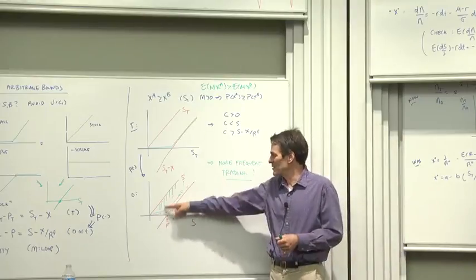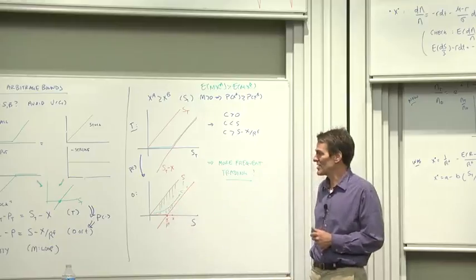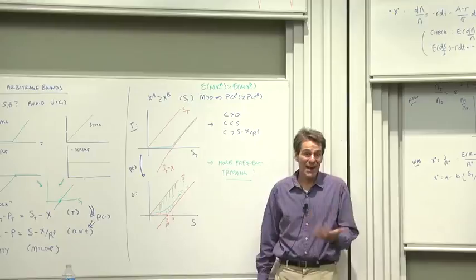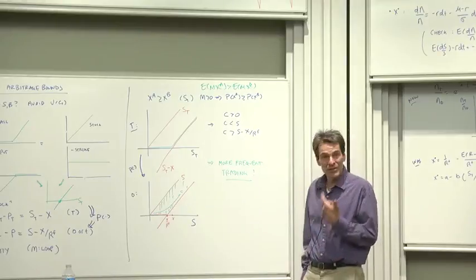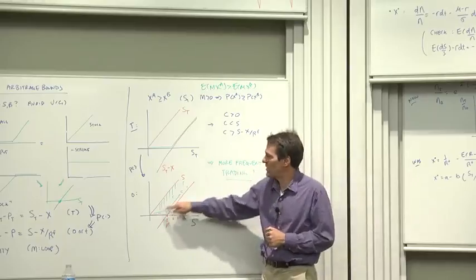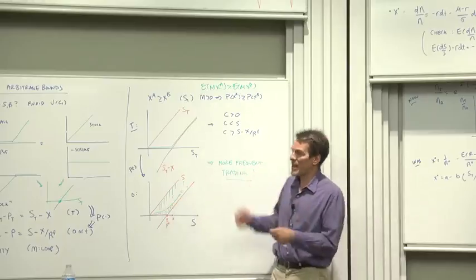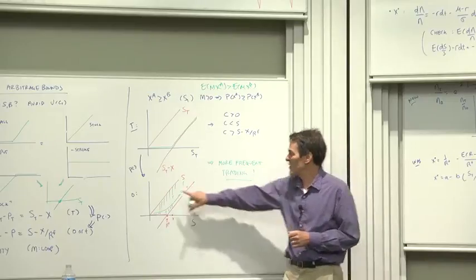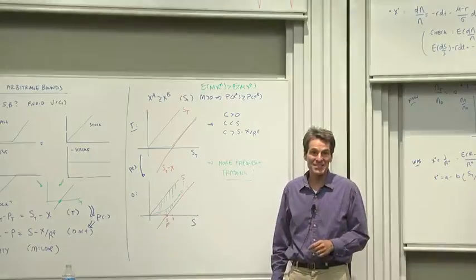Unfortunately, this isn't very useful — that's a very wide area that pure arbitrage gets us. How could we get farther? Do we have to jump to utility functions? No, there's another step we could take: allow intermediate trading. Let's expand the set of payoffs by letting us rebalance the portfolio. Let's see if we can bring those bounds down by doing that. That's what we do next.